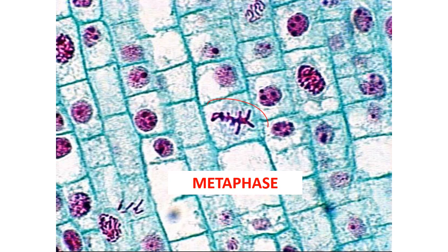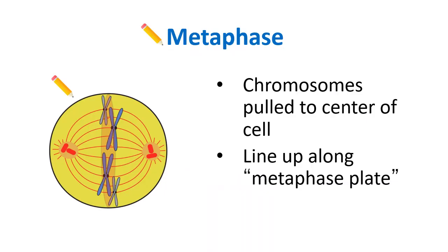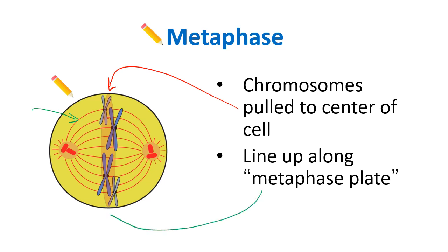Metaphase is the second phase. In a classic metaphase cell you can see chromosomes lined up along the middle — that's the key feature. 'Meta' means middle, and the chromosomes get pulled to the center of the cell by spindle fibers attached to the centromeres. They line up really nicely, and we call that middle line the metaphase plate.